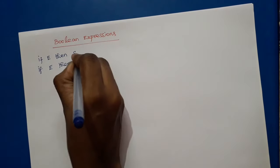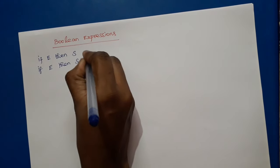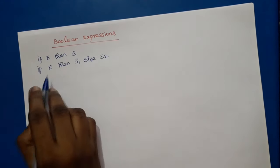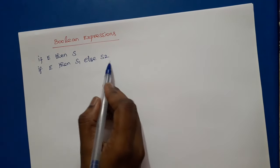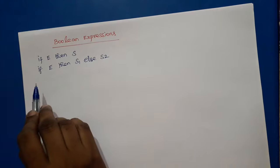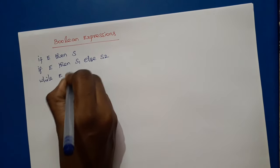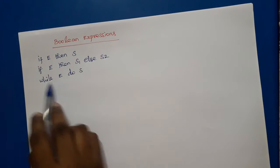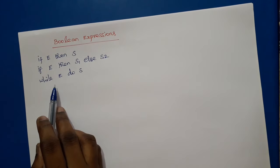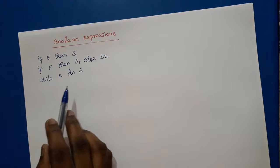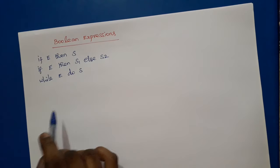So if E then S1 else S2 — here also the conditional expression is a Boolean expression. If this expression is true, S1 will be evaluated; otherwise S2 will be evaluated. While E do S — so in these flow of control statements, Boolean expressions are used as conditional statements and also for computing logical expressions.